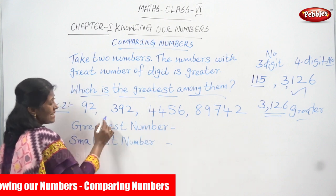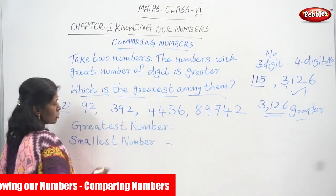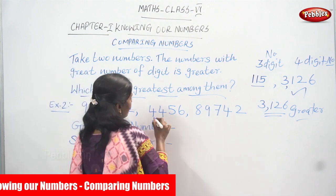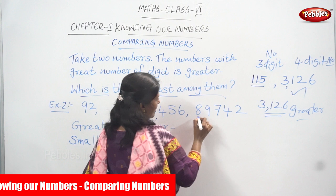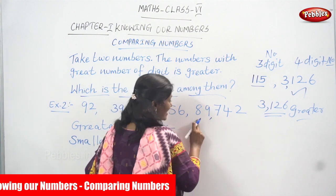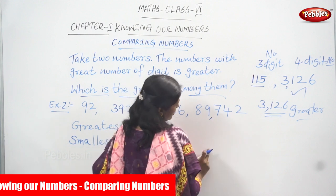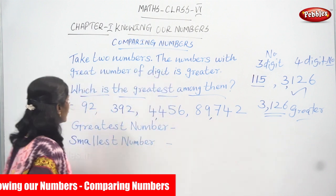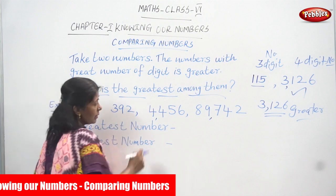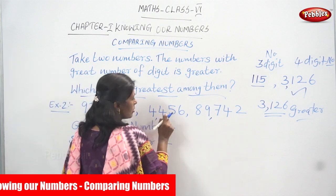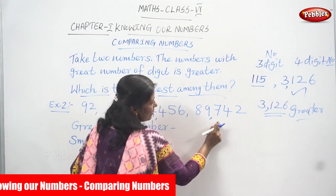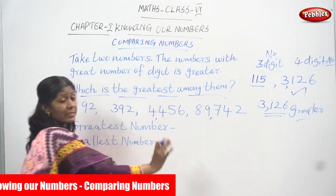The first number is 92. The second number is 392. The third number is 4456. The next number is 89,742. Let me repeat once again: first is 92, next is 392, third one is 4456, and the fourth number is 89,742.